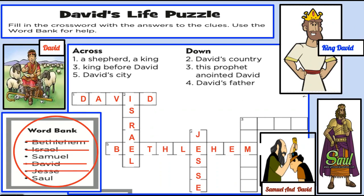Now, let's move to three going down. The clue is: this prophet anointed David. Well, who anointed David? That was Samuel. Samuel anointed David. The last clue is three across — it starts with an S and it's four letters long. The clue is king before David. We only have one choice left, and that was Saul. Saul was the king before David.